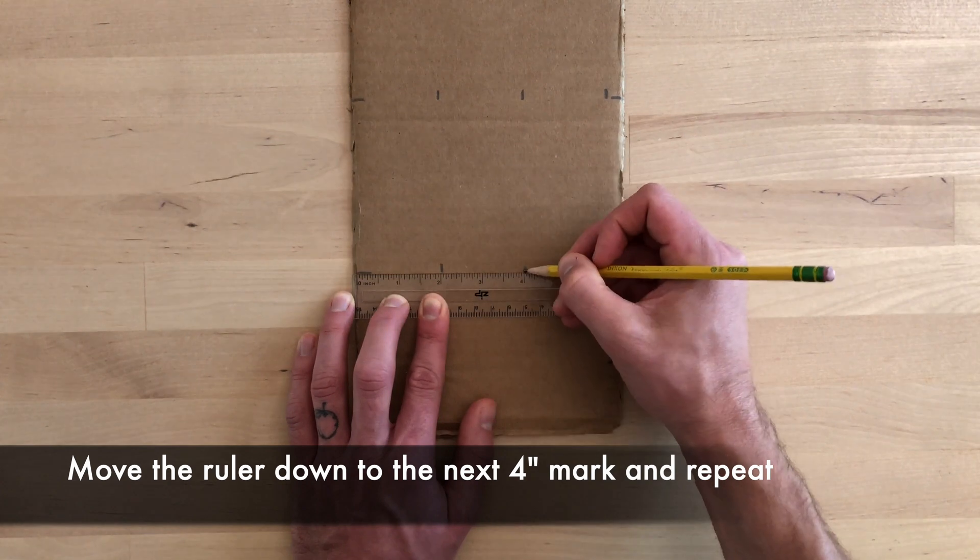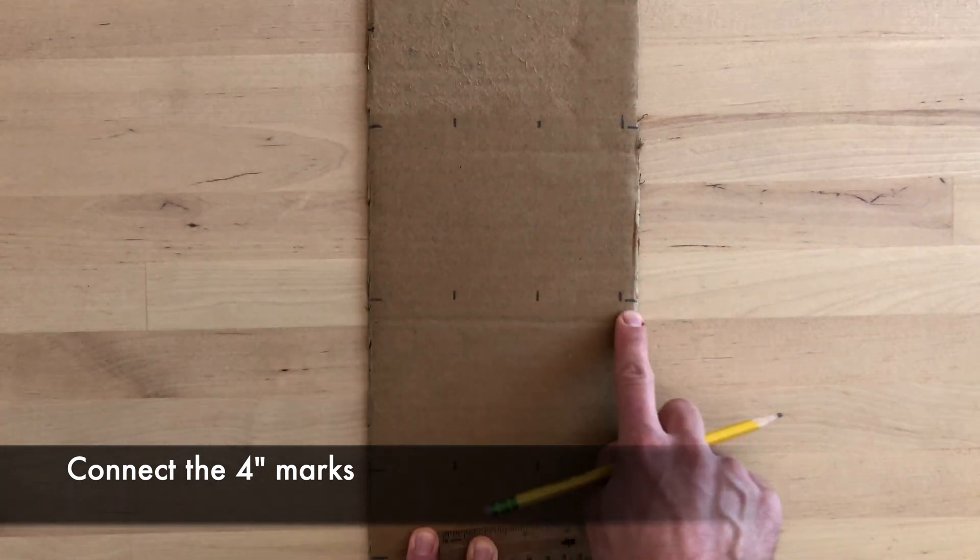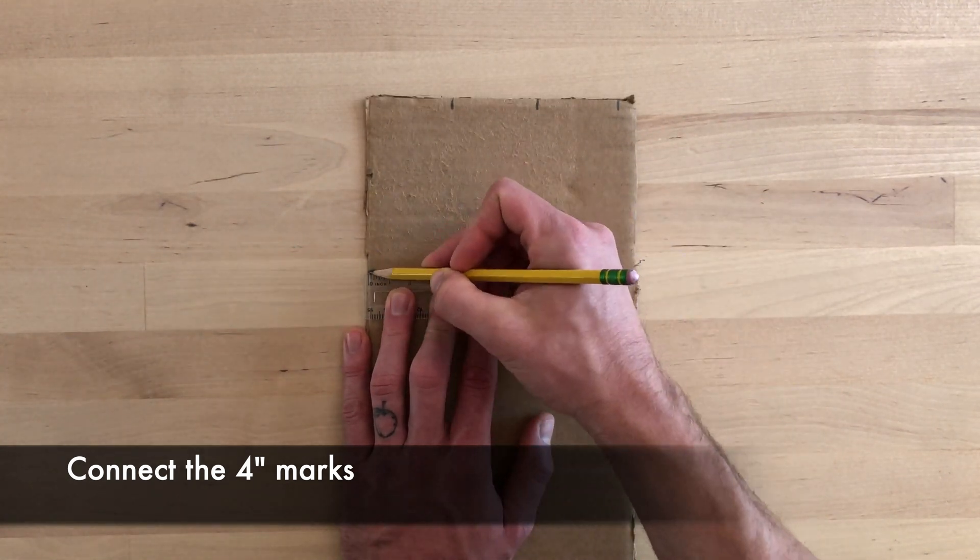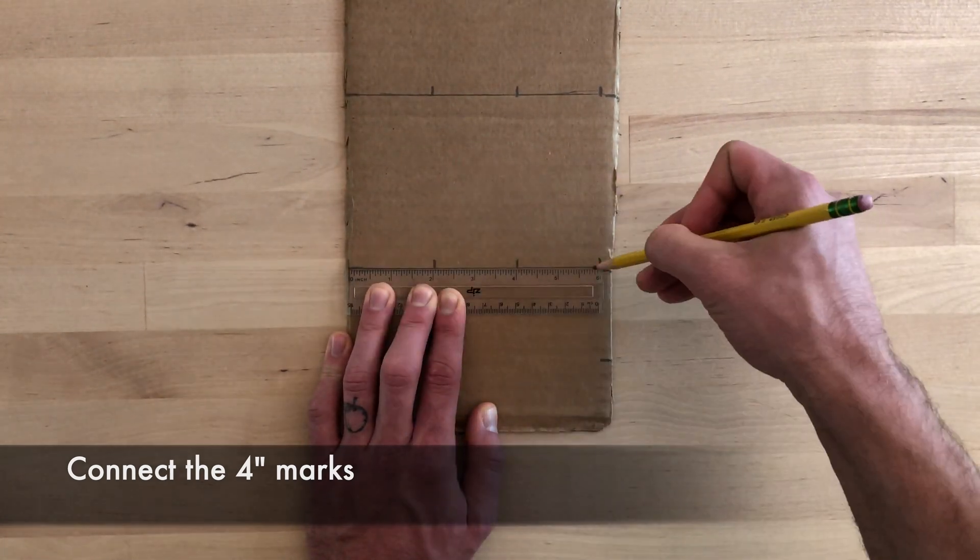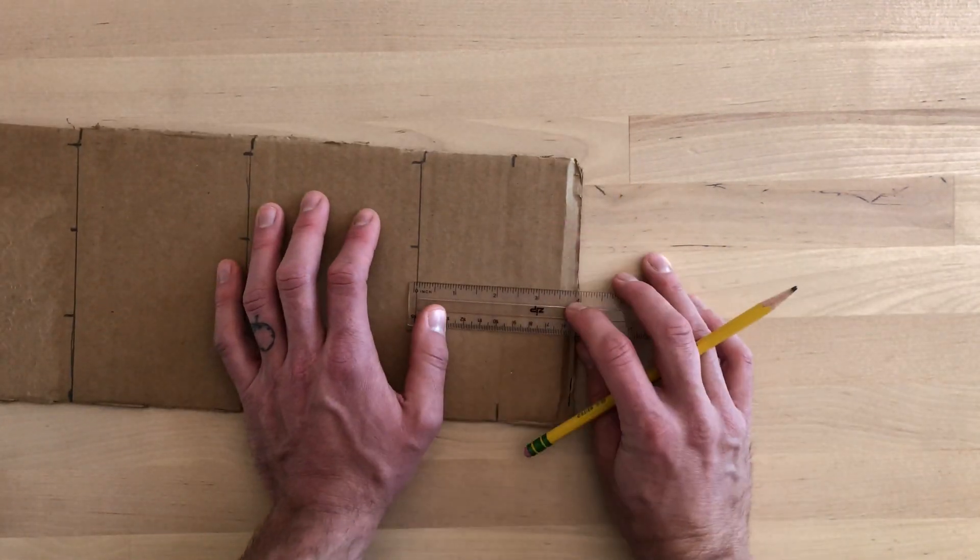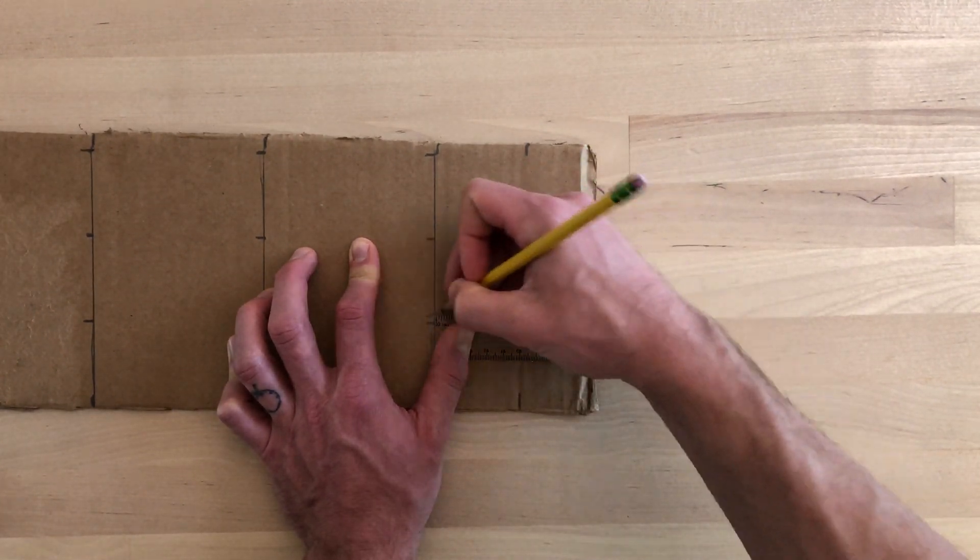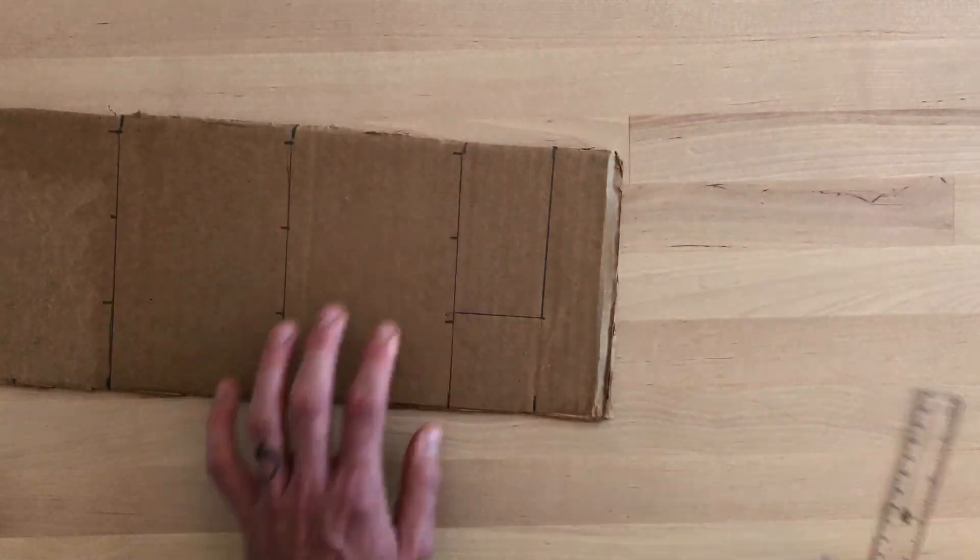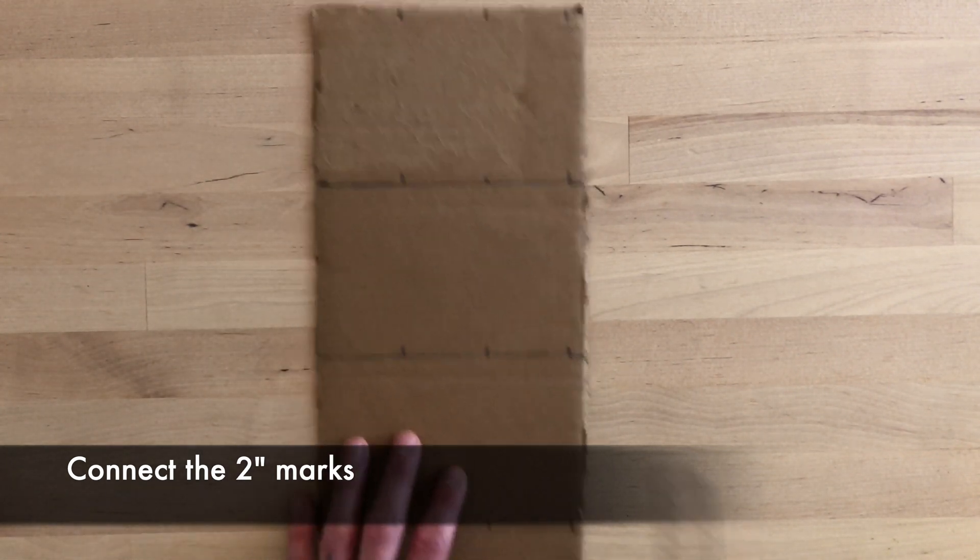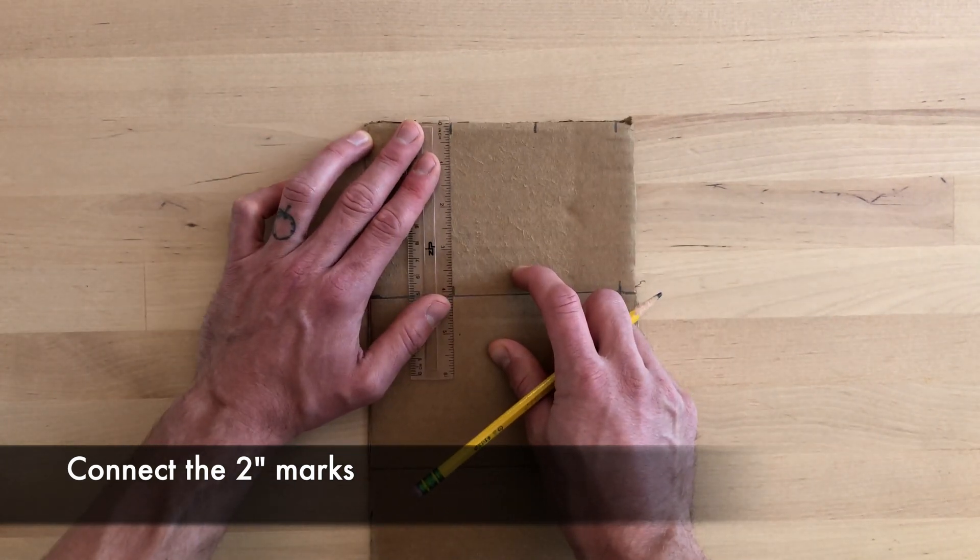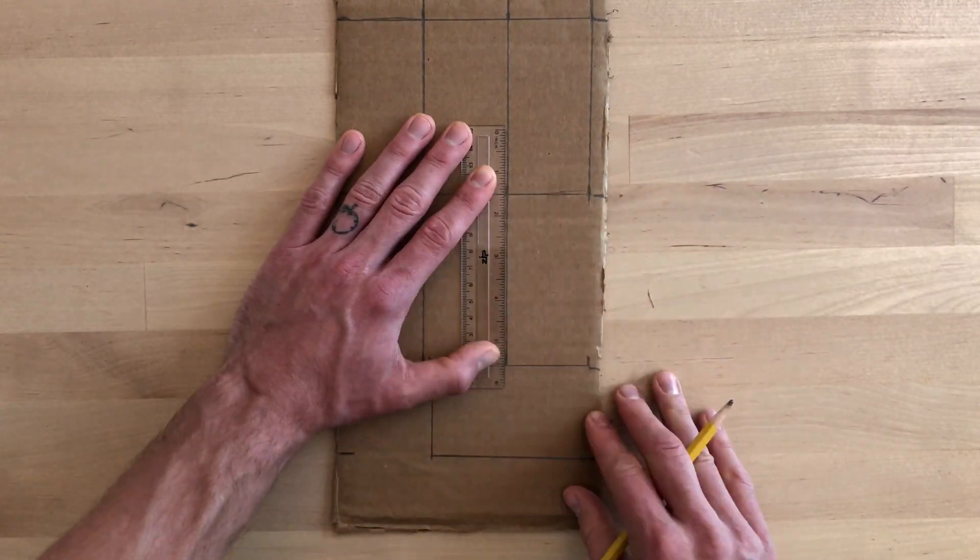Remember, you want to make as many as you possibly can. Now we're going to connect all of our four inch marks using our ruler or straightedge. Now connect the two inch marks. Make sure your ruler is nice and straight, so these lines are very clean and neat.